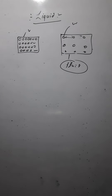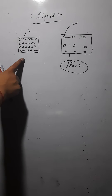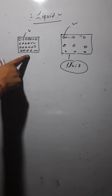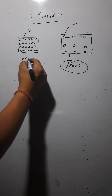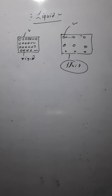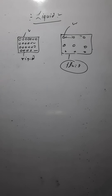The solid's shape cannot be changed, and that is why they are known as rigid. The liquids are known as fluids. Liquids flow and change shape, hence they are known as fluid.